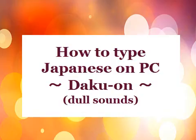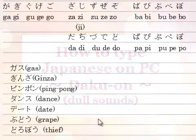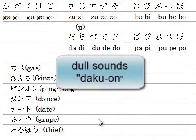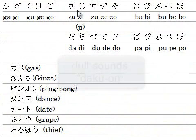みなさんこんにちは。Kazueです。How to type Japanese on the PC? Today's lesson is so-called 濁音 in Japanese — like ガギグゲゴ、ザジズゼゾ.